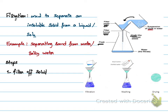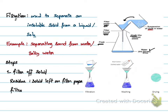What will pass through the filter paper is the solution or the liquid, which is like water. It is called the filtrate. So we have two terms: residue — the solid left on the filter paper — and filtrate — the liquid or solution which passes through the filter paper.